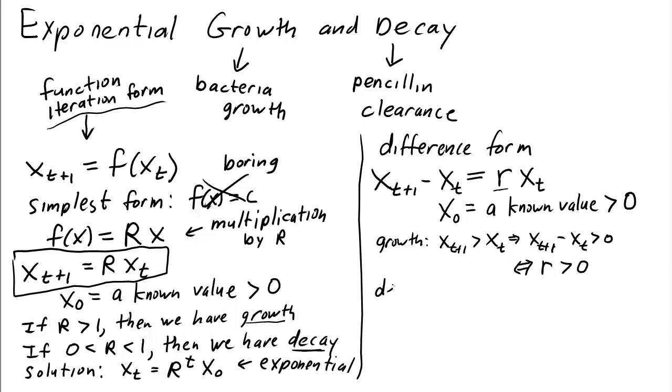On the other hand, if we wanted decay, we would just need to have r less than 0. And in fact, let's make it greater than negative 1 so that we don't subtract off more than what we started with. This might be a little confusing. Here we have condition r greater than 0 for growth and r between minus 1 and 0 for decay.